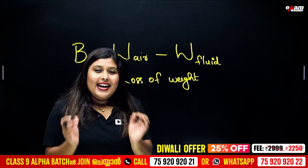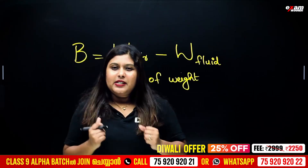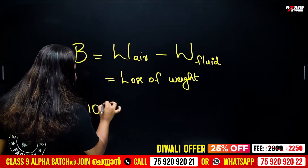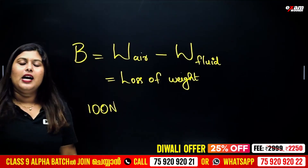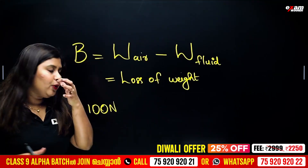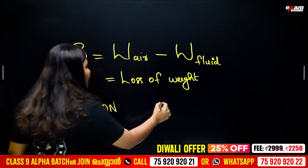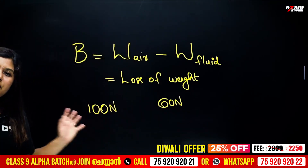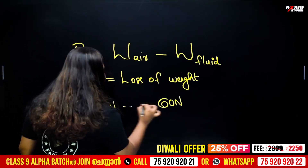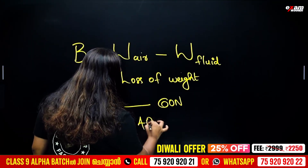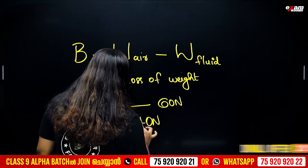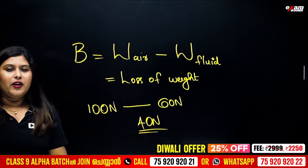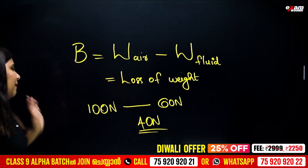Suppose, for example, the weight in air is 100 N. If the weight in air is 100 N and the weight in the fluid is 60 N, then the point force — the buoyant force — is the loss of weight. If the weight in fluid equals the weight in air minus buoyant force, it is very simple.